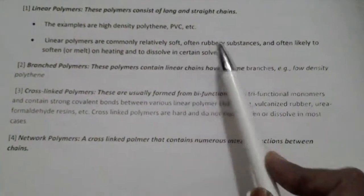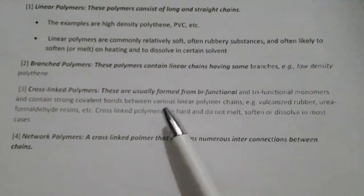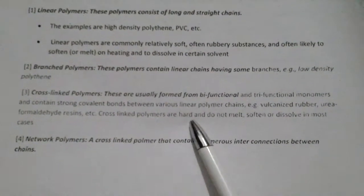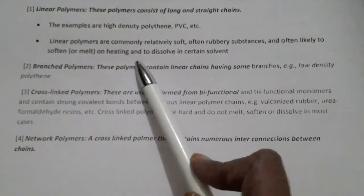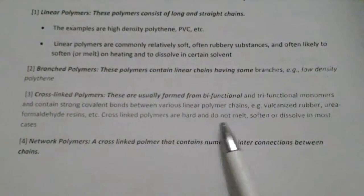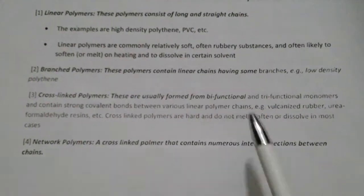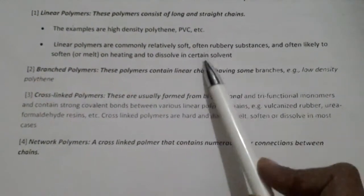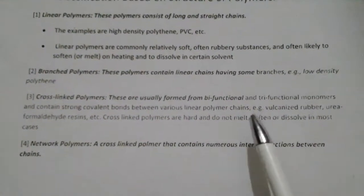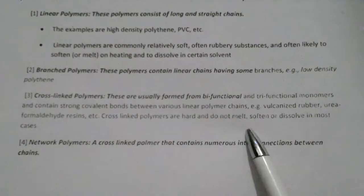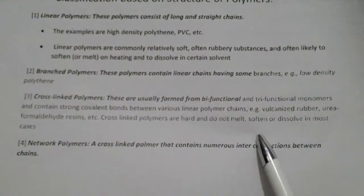For example, vulcanized rubber and urea formaldehyde resins. Comparing properties: linear polymers are soft and rubbery substances, whereas cross-linked polymers are hard. Linear polymers melt on heating, whereas cross-linked polymers do not melt. Linear polymers dissolve in certain solvents, whereas cross-linked polymers do not dissolve in most cases.